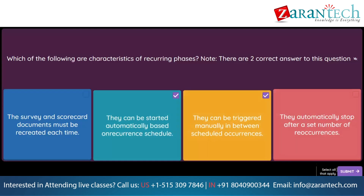Question. When does the registration tile initially appear in the supplier 360-degree profile? Option 1: When the supplier registration is pending approval. Option 2: When the supplier request is approved. Option 3: When the supplier registration is approved. Option 4: When the supplier request is submitted.